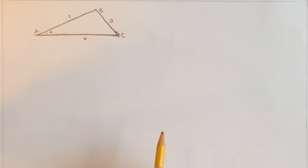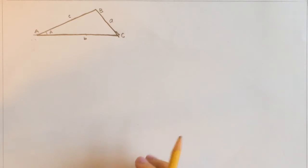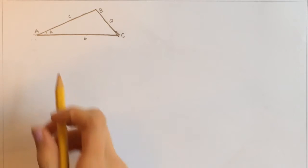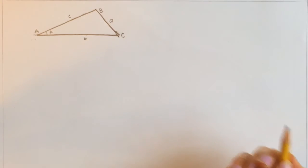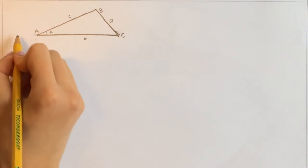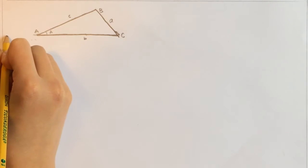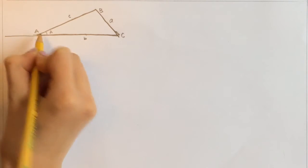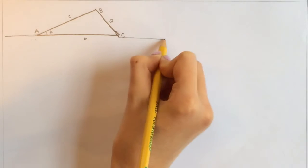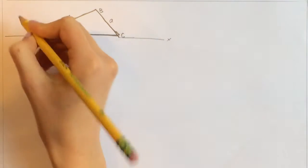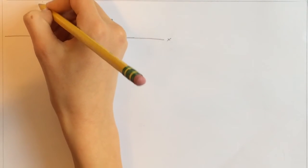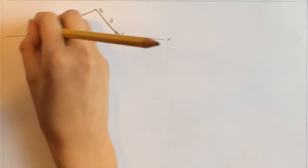Okay, so what we're going to do right now, to try to make this a little easier to visualize, is we're going to put this triangle on the coordinate system — just an X, Y coordinate.